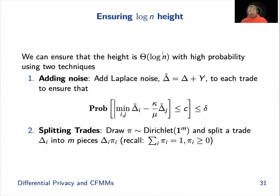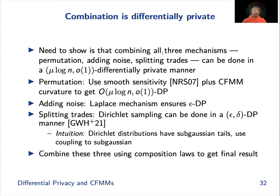To ensure the log n height, first we need the trades to be spread out when permuted — for example, trades of all size one give no entropy regardless of permutation. So we add noise to the trades so the probability that elements of the partial sum are the same is low. We also split very big trades — for whale trades like size 100, we split them randomly using the Dirichlet distribution. Splitting big trades increases the variance of the adversary's learning algorithm. You can then combine all these operations using composition rules of differential privacy and show that the overall mechanism is differentially private.